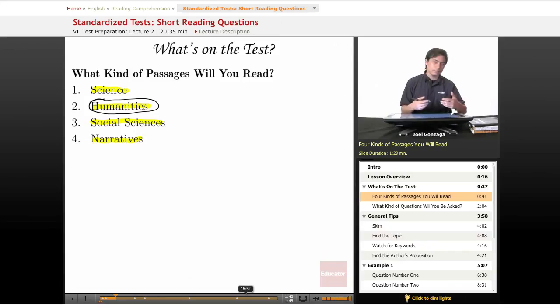That's kind of social sciences, but that could also be considered humanities. Humanities is kind of broad and covers a lot of subjects. Probably the easiest ones to get are the social sciences and the humanities ones. Science and narratives tend to be a little bit more difficult, but I guess it all depends on the kind of reader you are.